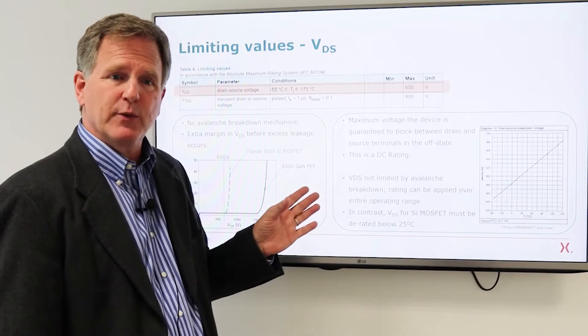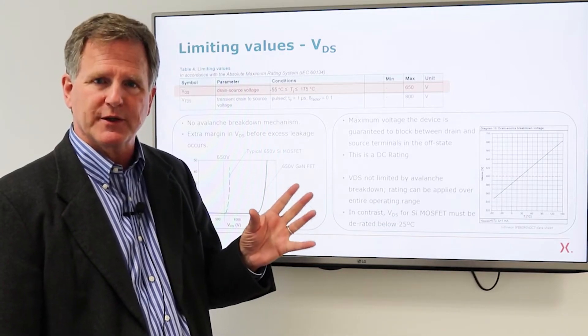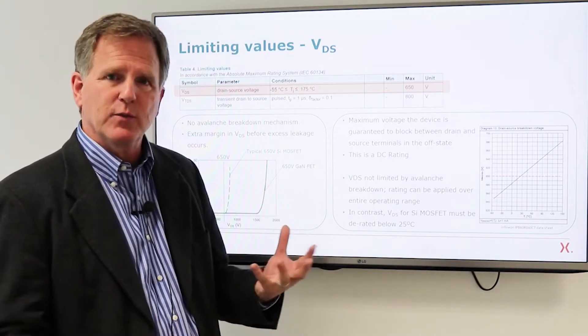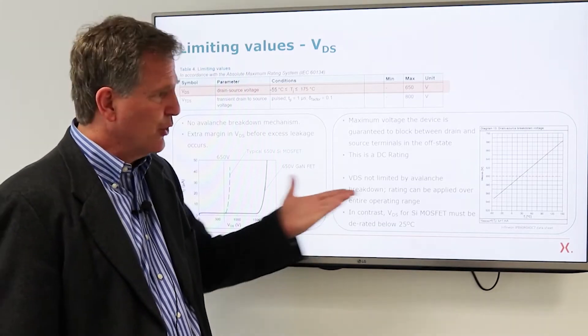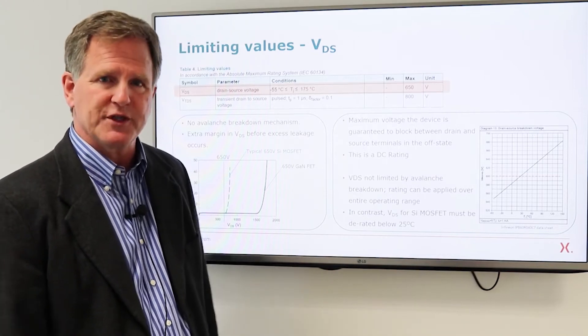And I would also say you don't have to derate based on cosmic radiation. That's something some engineers are aware of and concerned with that they should apply a derating factor. Again that's associated with an avalanche breakdown mechanism. Since there is none there's no reason to derate the device. 650 volts really is a voltage it can operate at.